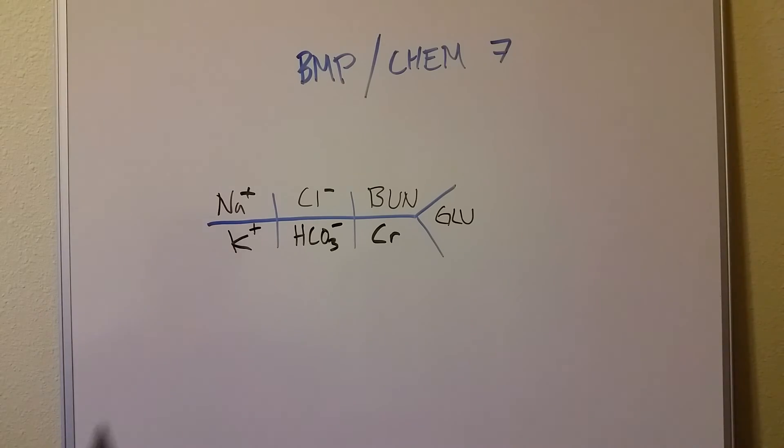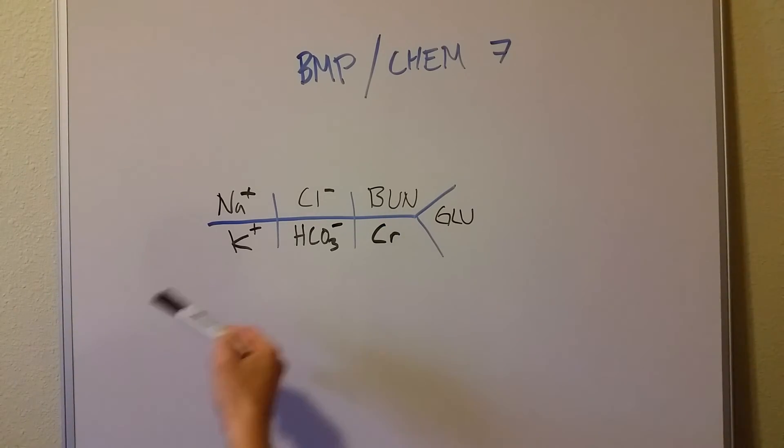Salty bun with sugar or salty bun with glucose. BUN, creatinine ratio. So BUN goes over creatinine. And then you just pluses and minuses. And then you have the fishbone diagram or the shorthand notation for the basic metabolic panel, also known as the CHEM 7. Thanks.